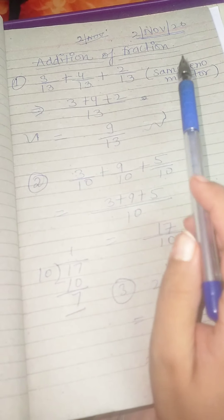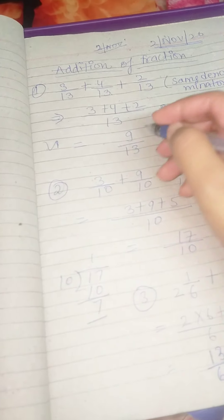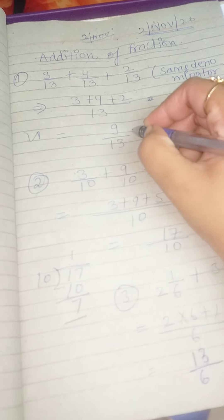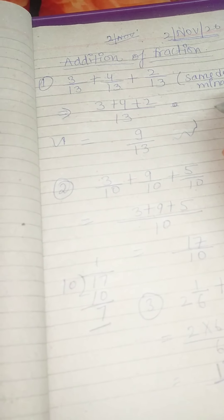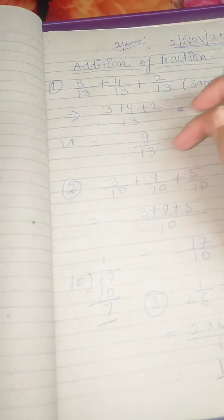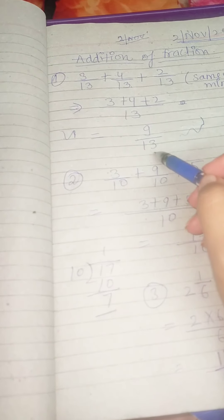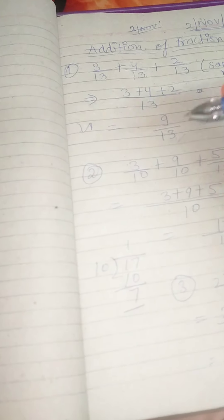This will be your answer, 9 by 13. And if we want to convert it to mixed fraction? Sorry, this won't come in mixed fraction because the denominator is bigger, so this will remain the answer.